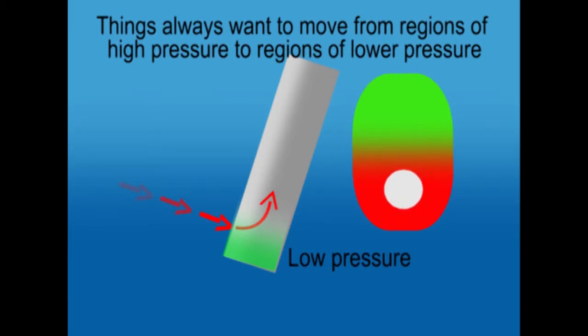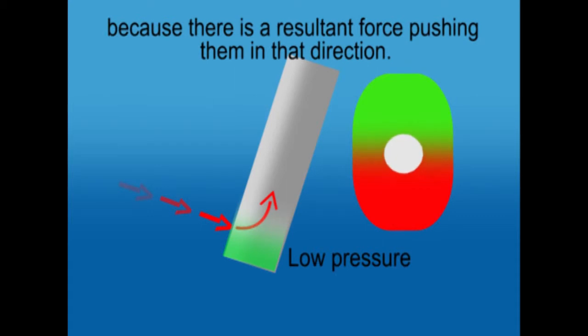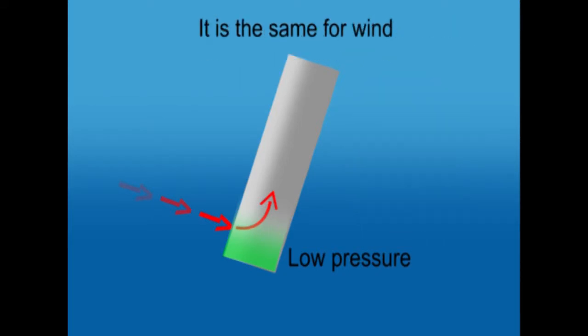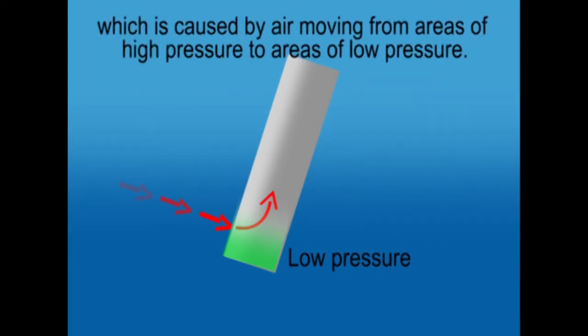Things always want to move from regions of high pressure to regions of lower pressure because there is a resultant force pushing them in that direction. This is the same for wind, which is caused by air moving from areas of high pressure to areas of low pressure.